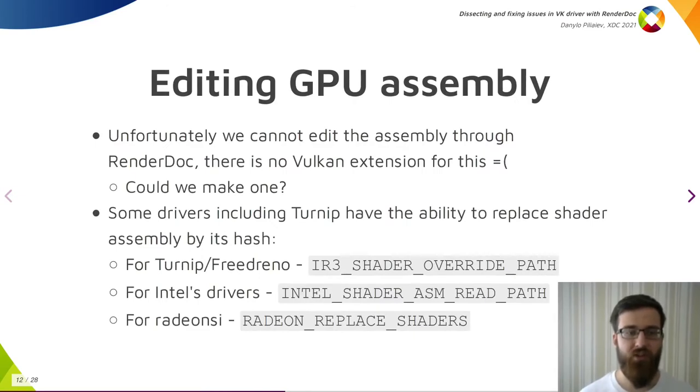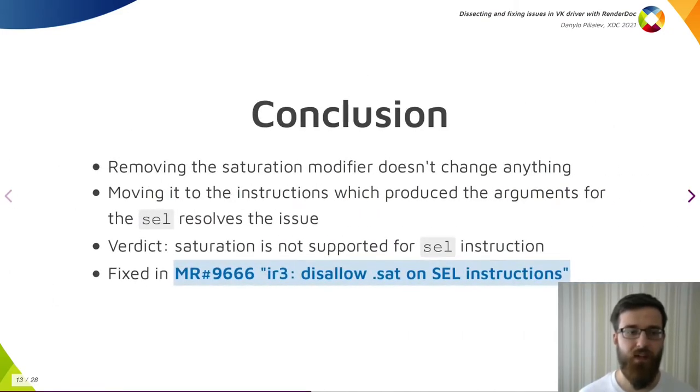The easiest way would be to directly edit the shader's assembly. Unfortunately, we cannot edit the assembly through RenderDoc - there is no Vulkan extension for this. Maybe we could make one? There were many times I could have used it. What else could we do? Some drivers, including Turnip, have the ability to replace a shader assembly given the shader hash, which we could use to test our theory. After editing the assembly, I concluded that removal of the saturation modifier doesn't change anything. However, if I move the saturation modifier from the selection instruction to the instructions which produce its sources, the issue disappeared. Together, this means the saturation modifier doesn't work on the selection instruction. I double-checked it in a standalone reproducer and searched the assembly from the proprietary driver to see whether it ever emits such construction. It did not. After confirming it, it was trivially fixed by preventing saturation modifier from being applied to this instruction.